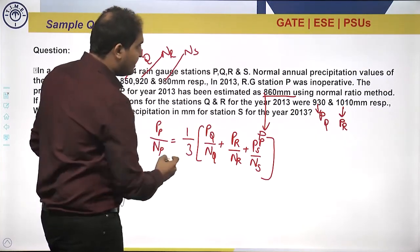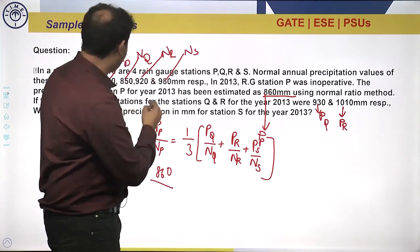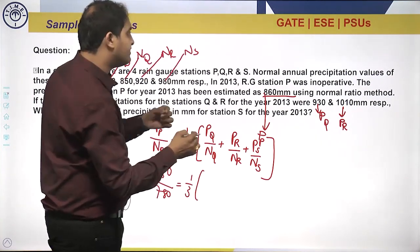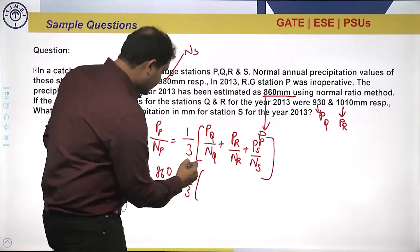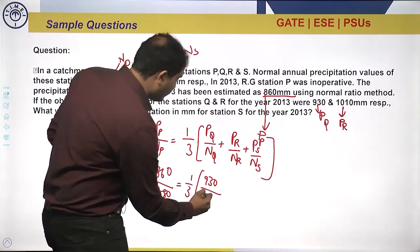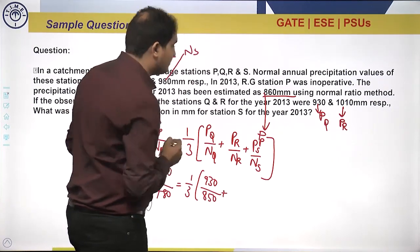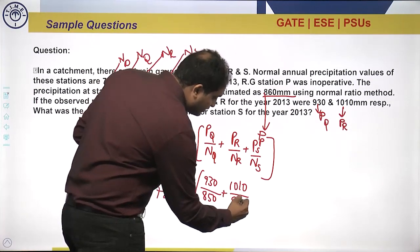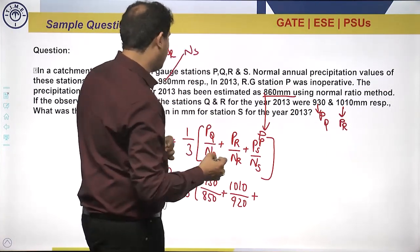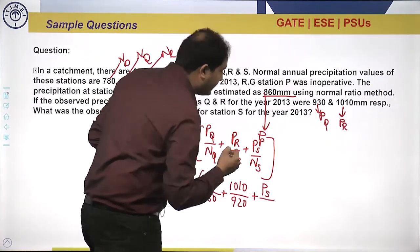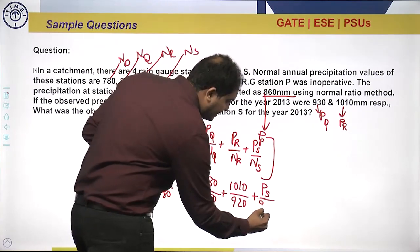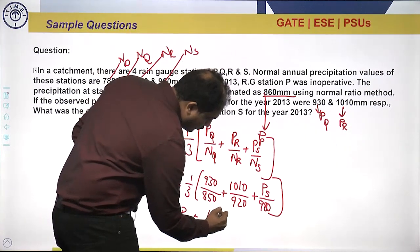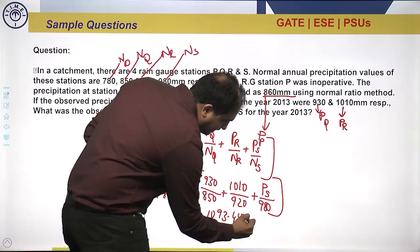On substitution: 860 / 780 = (1/3) × (930 / 850 + 1010 / 920 + P_S / 980). P_P = 860 is already given by the normal ratio method. NR is 920, NQ is 850, and NS is 980. On solving this, we get P_S = 1093.45 mm.